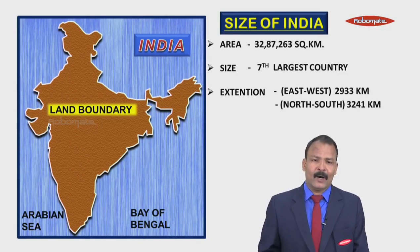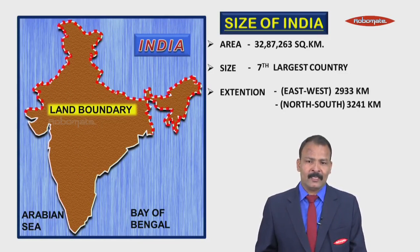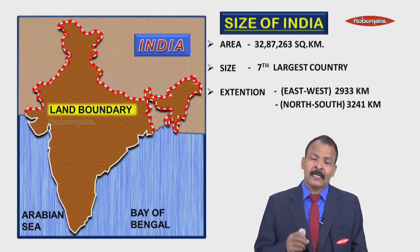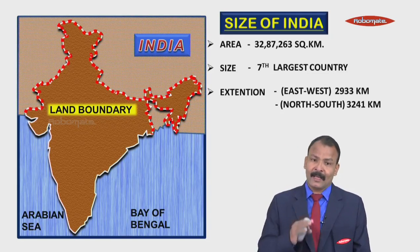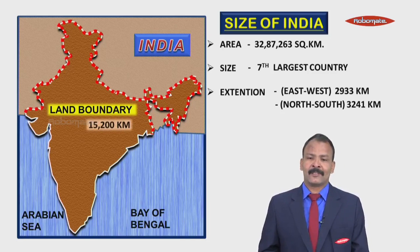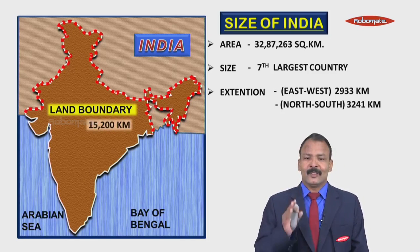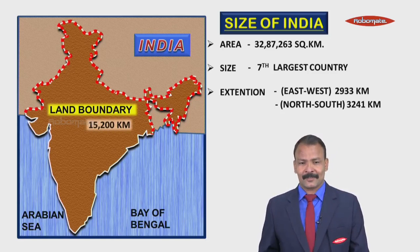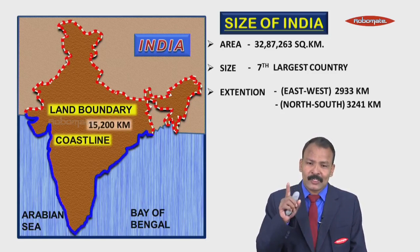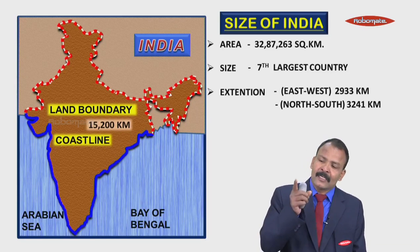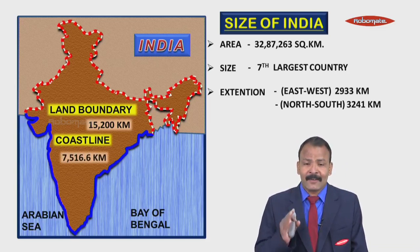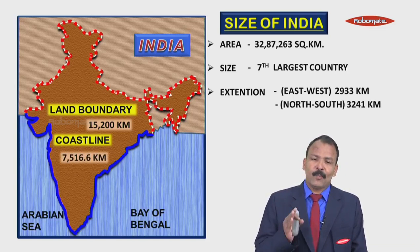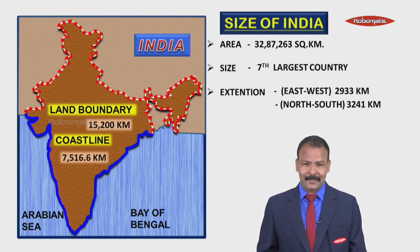The land boundary — the boundary of our country with other countries — is 15,200 kilometers. Similarly, the coastline, which is the line along the sea, is 7516.6 kilometers. Together these form the total border of the country.